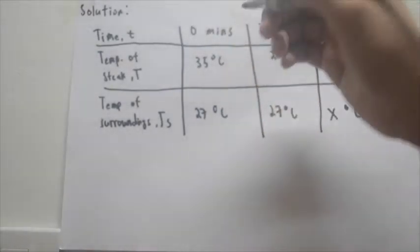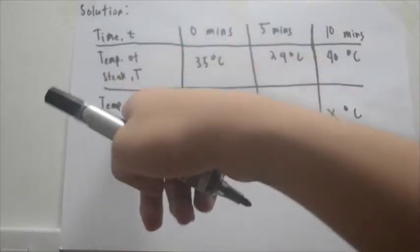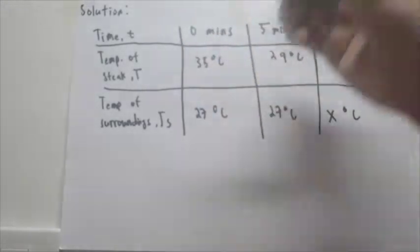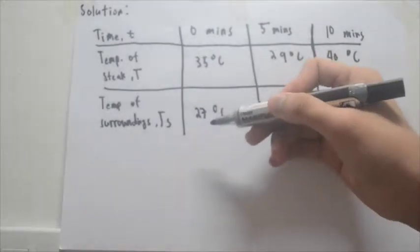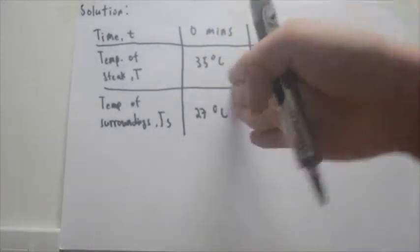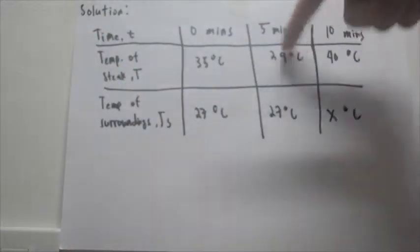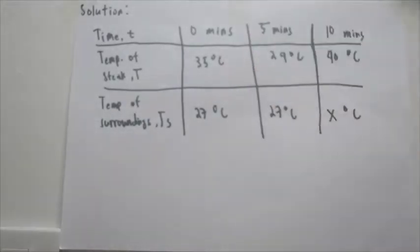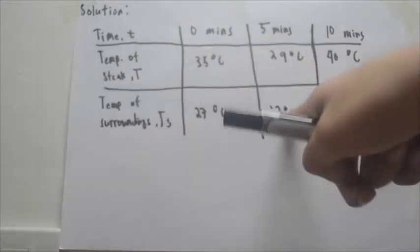As we read the problem: at 0 minutes, the temperature of the steak is 35 degrees Celsius, and the temperature of the surroundings is 27 degrees Celsius. At 5 minutes, the temperature of the steak went down to 29 degrees Celsius — so it became kind of cold.